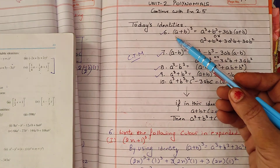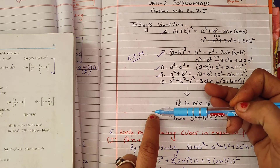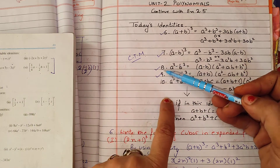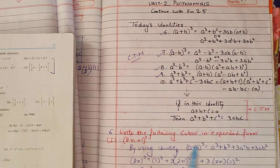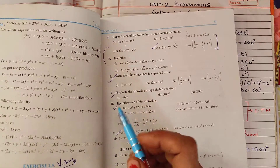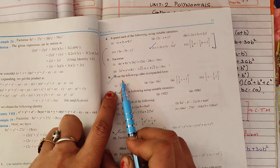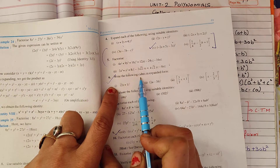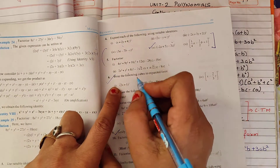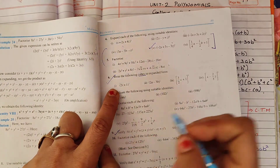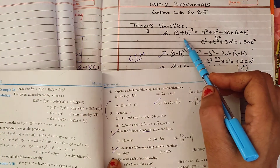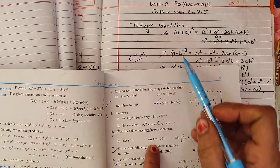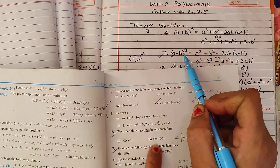Today we will note 5 identities — we will now note identities 6, 7, 8 and 9 on which today's questions are based. Let's start with the first part of the sixth question: write the following cubes in expanded form. You will get the word 'cube' here, which means cube identity. If there is a plus sign, use the plus identity; if there is a minus sign, use the minus identity.